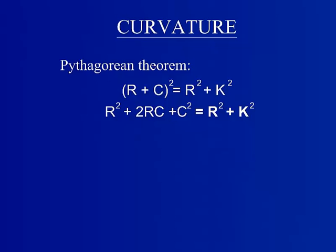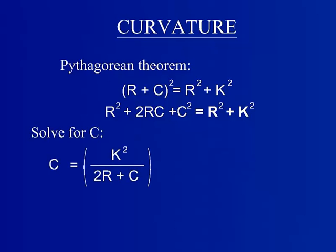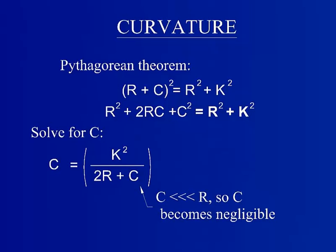Expand the binomial and then solve for c. The c left in the denominator here is added to twice the radius of the Earth. The curvature error, c, is likely only feet or a fraction of a foot. In comparison to the radius of the Earth, about 3,959 miles, this will be nominal and therefore an accurate solution can still be found by excluding it.